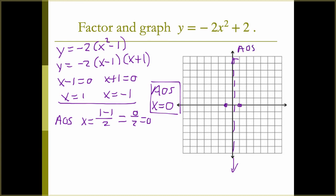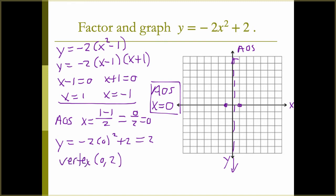Our axis of symmetry runs right along the y-axis. Now plug x equals 0 into the original equation: y equals negative 2 times 0 squared plus 2, which is just 2. So our vertex is the point (0, 2). Since A is negative 2, the parabola opens down, which means the vertex is above the x-axis. Graph it opening down through the intercepts at negative 1 and 1.